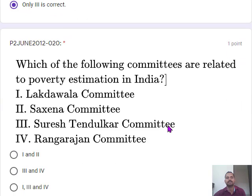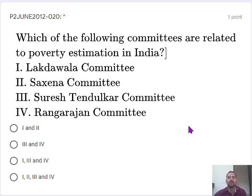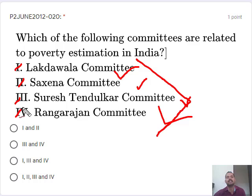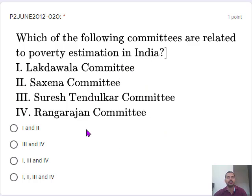The final question asks which committees are related to poverty estimation in India. All the listed committees are related to poverty estimation in India, and you should also remember their chronology, as that can be asked in examinations. There are other concepts related to poverty estimation as well, which will be covered later. The correct option is 1, 2, 3 and 4. This concludes the brief discussion — we will now move to the next practice set.